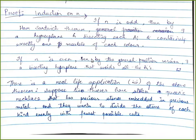If n is even, you invoke the general position version, by which you find a hyperplane that bisects each A_i while avoiding all points of each A_i — partitioning each A_i into exactly half. That is quite simple.